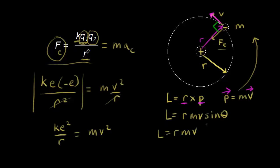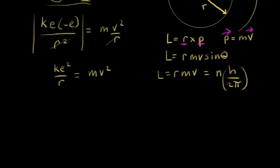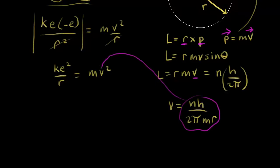Niels Bohr thought that this angular momentum should be quantized. He set the angular momentum equal to some integer n — like 1, 2, or 3 — times h (Planck's constant) divided by two pi. Solving for velocity from this equation, the velocity equals n times h divided by two pi times m times r.